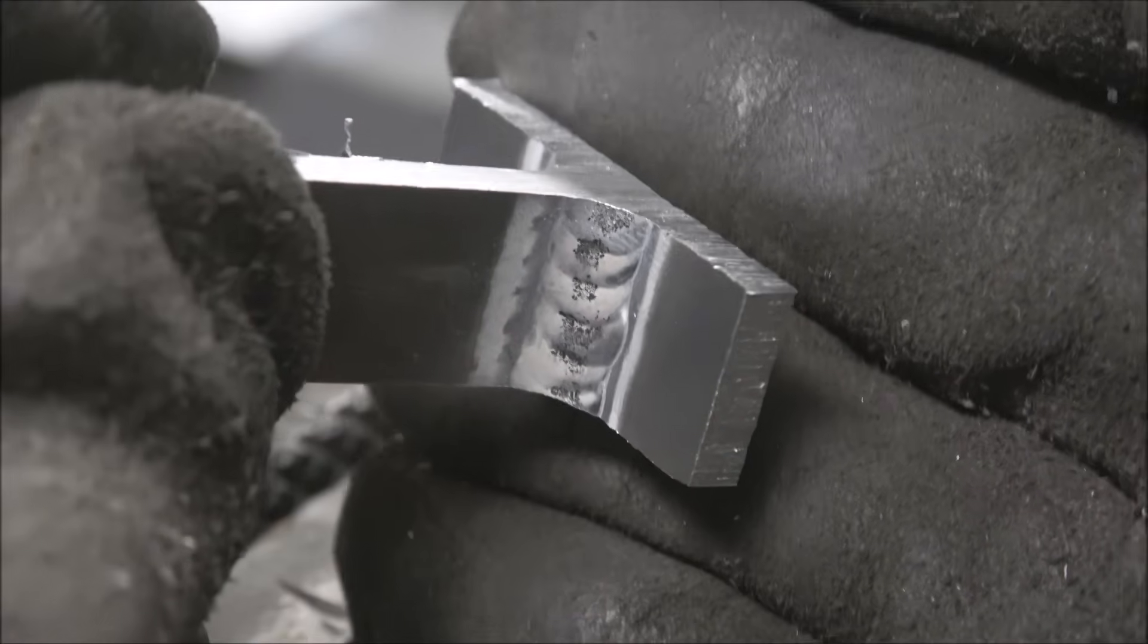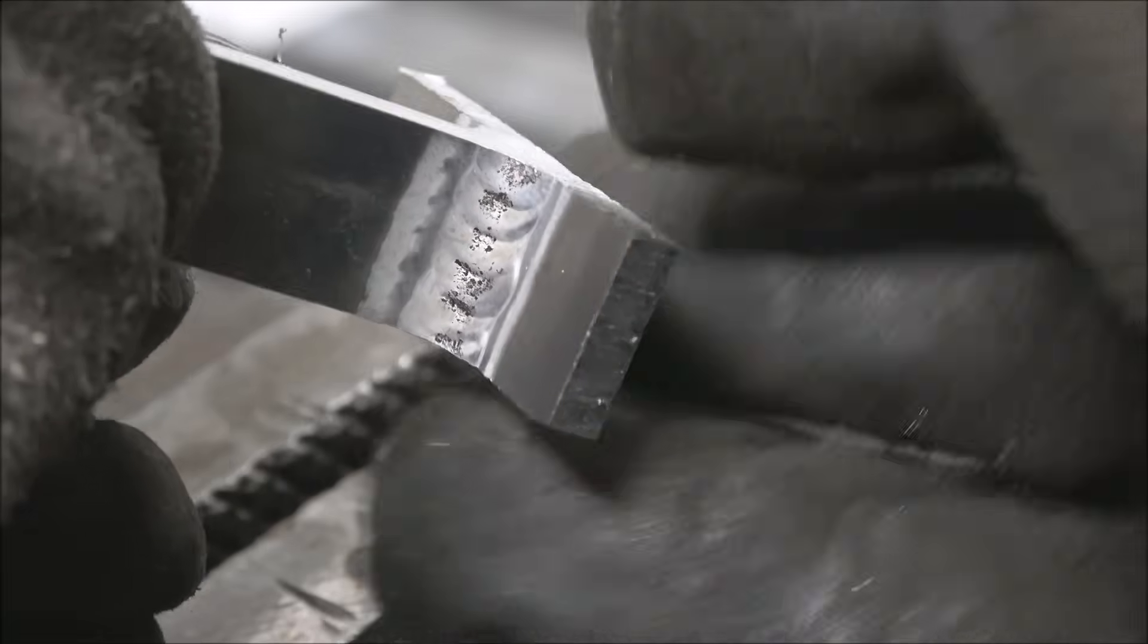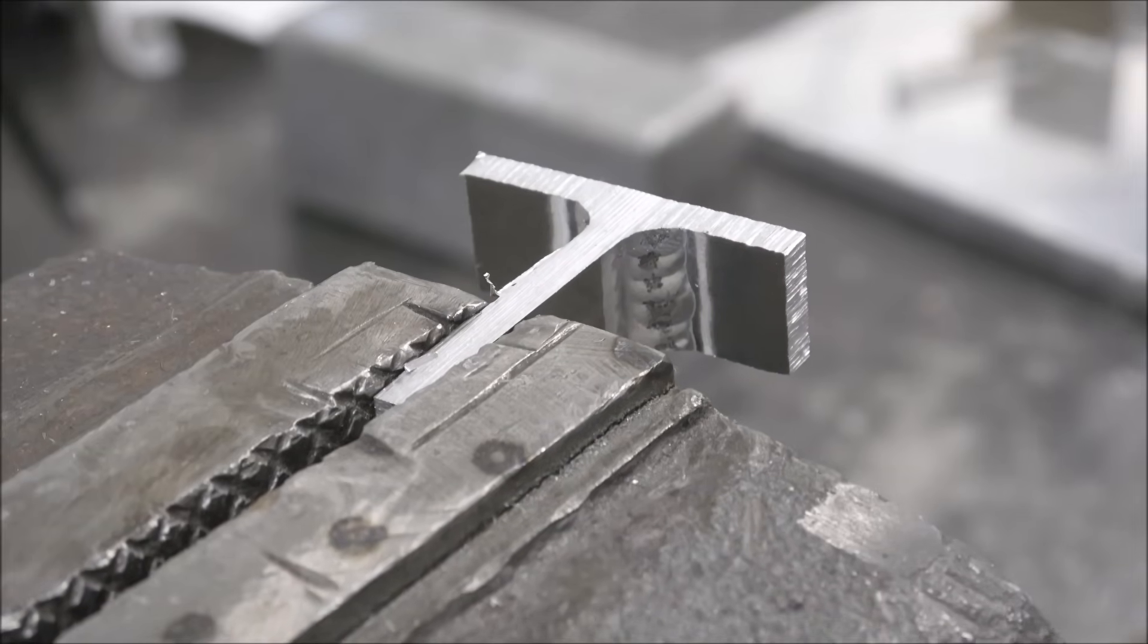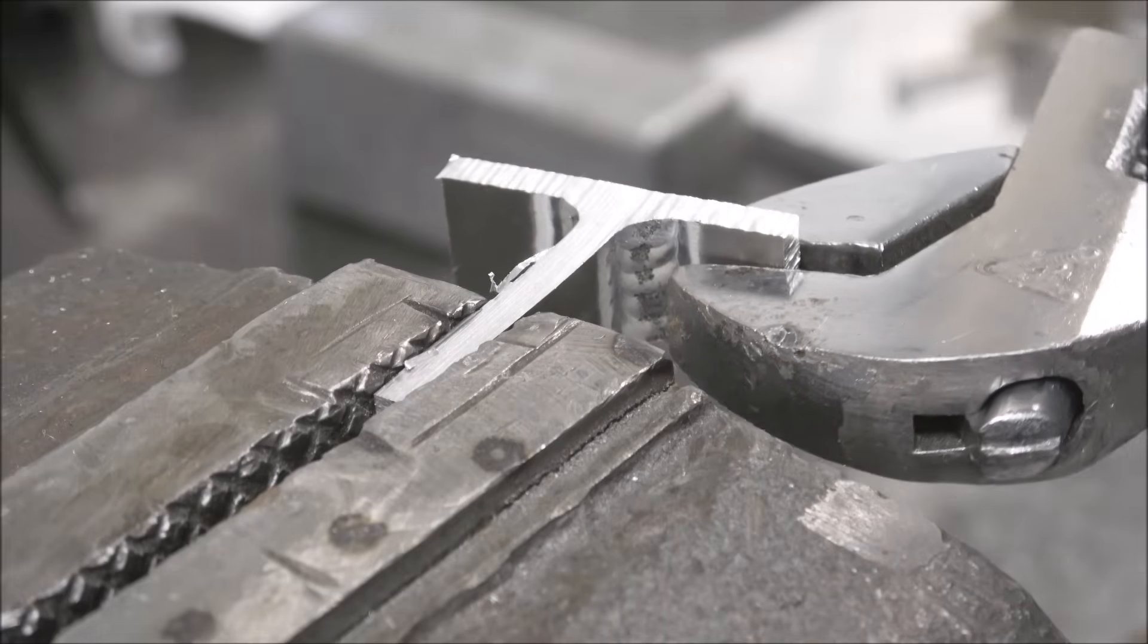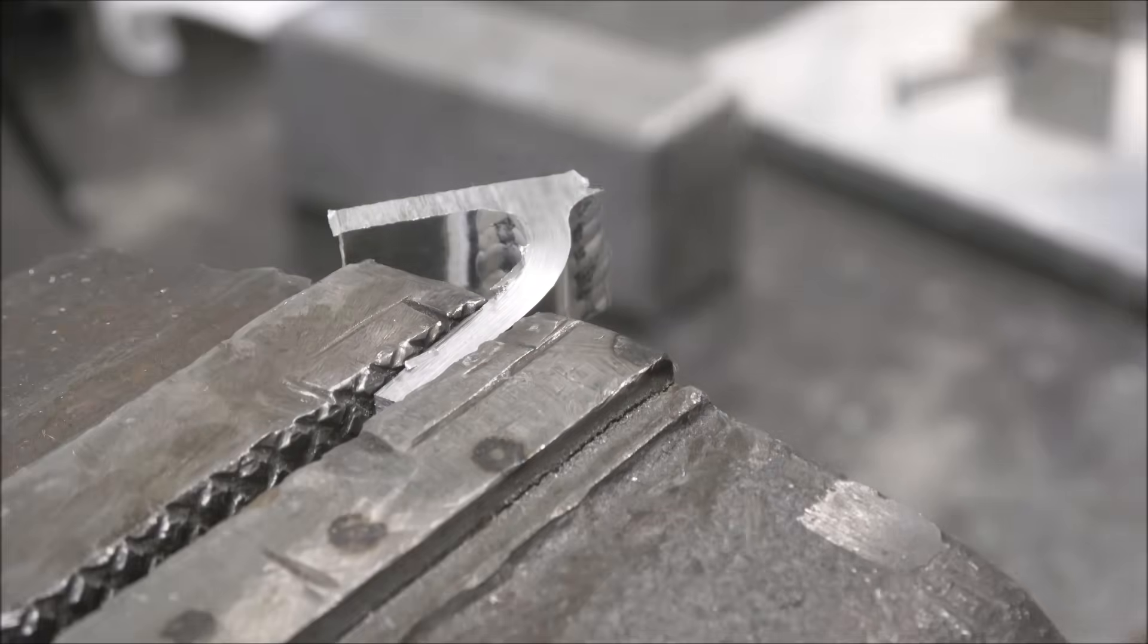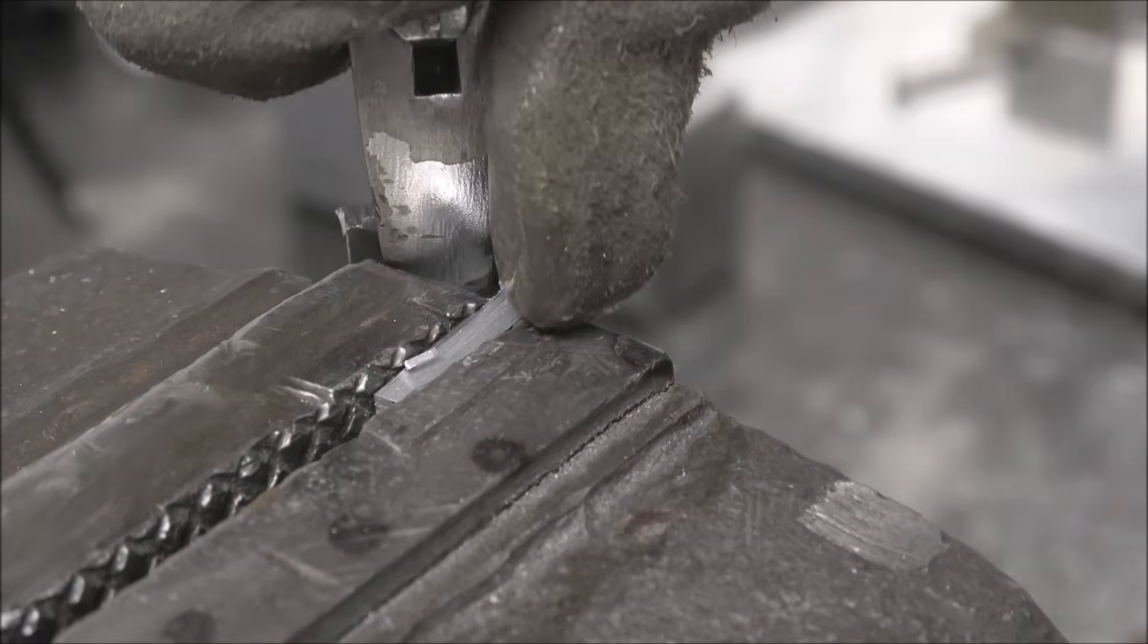Okay, this first one pretty cold weld. Colder than I would normally do on like 6061 or 5052 sheet. Just single pass. Single pass on each side. And I let it cool down before the second pass completely.